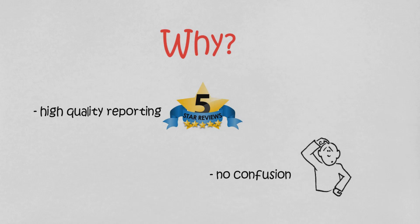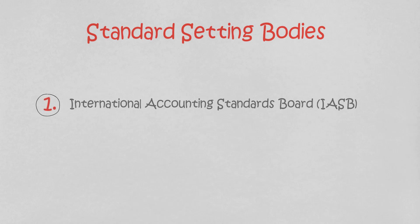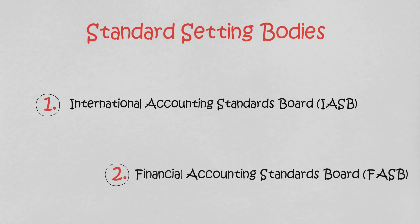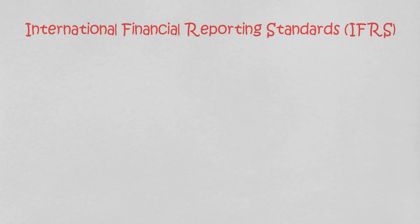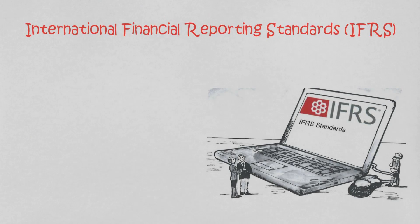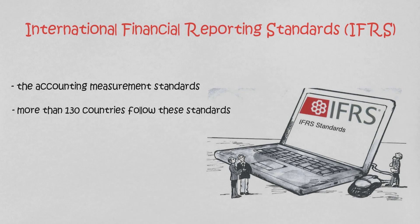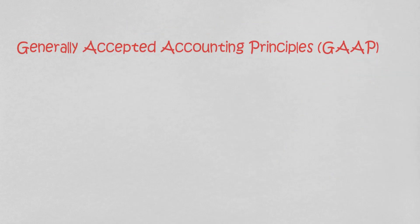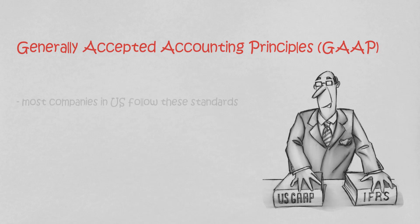Who sets those standards? Presently, there are two primary accounting standard-setting bodies: the International Accounting Standards Board (IASB) and the Financial Accounting Standards Board (FASB). The standards determined by the IASB are called International Financial Reporting Standards, or IFRS, followed by more than 130 countries. Most companies in the United States follow standards issued by the FASB, called Generally Accepted Accounting Principles, or GAAP.